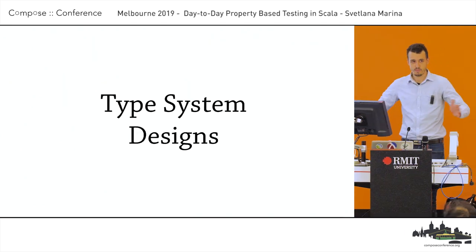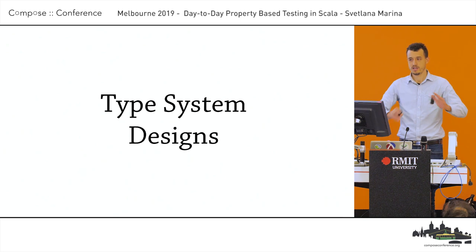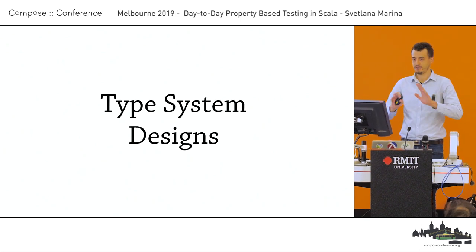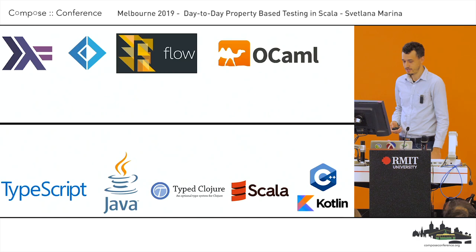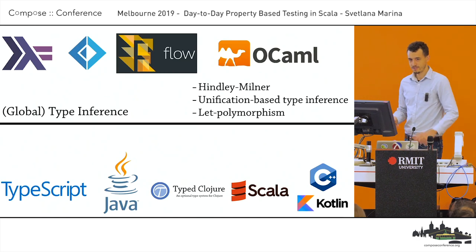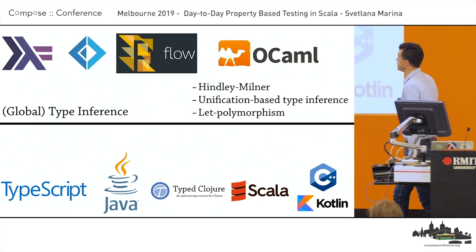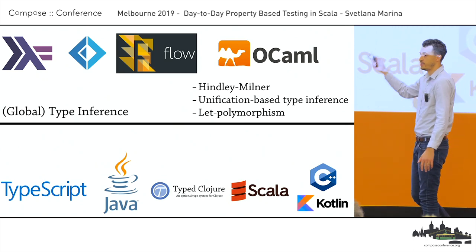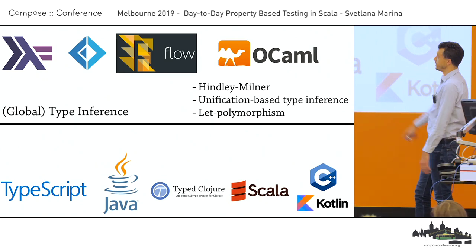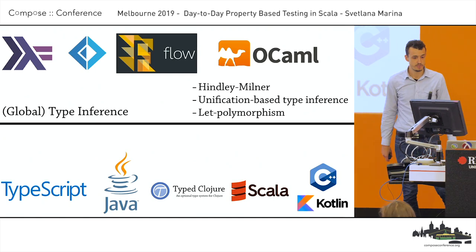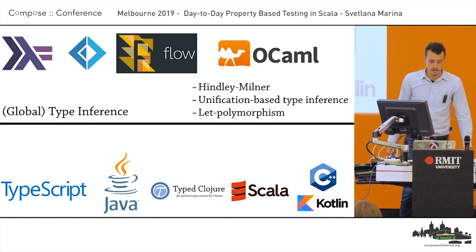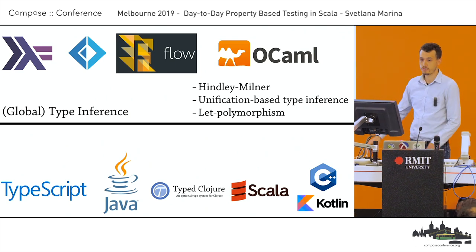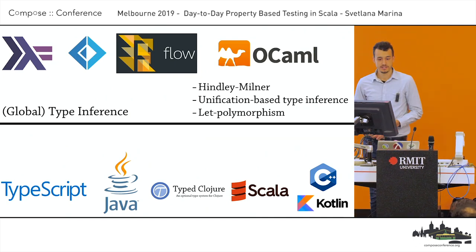What a static type system does is compare the implementation via static type checking and figure out if your program agrees with the type. You say the program is supposed to do all this stuff, and the static type checker, without running the program, tells you if it actually conforms to that type. There are plenty of different ways of implementing a type system. The first kind uses global type inference — also known as Hindley-Milner, unification-based inference, or let polymorphism. Languages like Haskell, F#, Flow, and OCaml are in this vein.